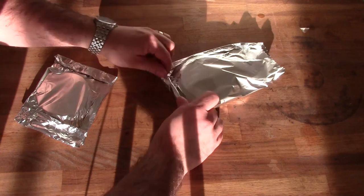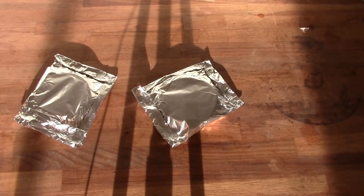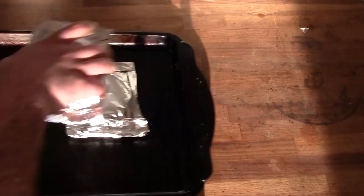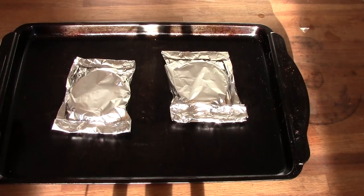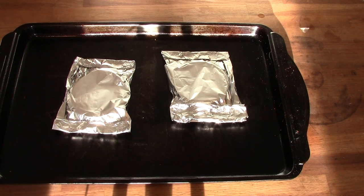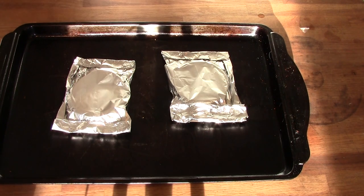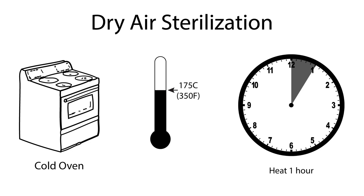And once we have these wrapped up, place them onto a cookie tray. And we're then going to place this into the oven at a high enough temperature that we can get what's called hot air sterilization. To sterilize these plates, place them into a cold oven and then set the oven to 175 Celsius or 350 degrees Fahrenheit. Once the oven comes up to temperature, set a one hour timer. And at the end of that time period, remove the plates from the oven. This is sufficient to sterilize them completely. And as long as they remain in those foil packets, they'll remain sterile until needed.